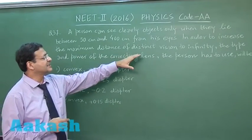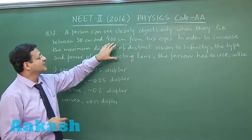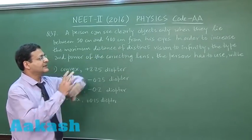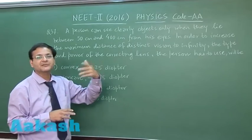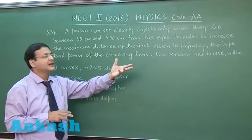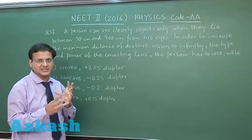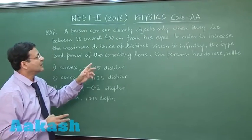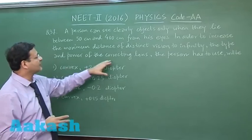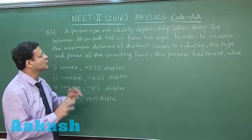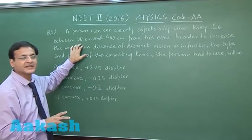The range of that person has been given. In order to increase the maximum distance of distinct vision to infinity, that means this 400 cm point has to be shifted to infinity. That means if an object is kept at infinity, its image should be formed at 400 cm from the lens. This is the kind of correcting lens you have to use. Now they are asking the type and power of the correcting lens the person has to use. You don't have to do anything with this 50 cm, it's only the 400 cm point that has to be shifted to infinity.